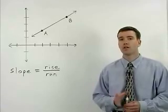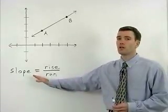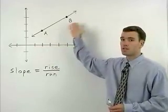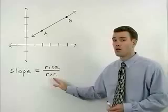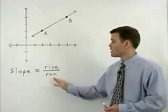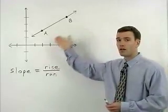In algebra, we use the word slope to describe how steep a line is. And slope can be found using the ratio rise over run between any two points that are on that line.